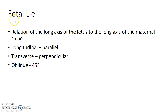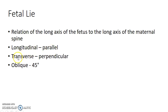Now coming to fetal lie. Fetal lie is the relation of the long axis of the fetus to the long axis of the maternal spine. There are three types of lie: longitudinal lie when the fetus is parallel to the maternal spine, transverse lie when the fetus is perpendicular to the maternal spine, and oblique lie when the fetus and the maternal spine are at an angle of 45 degrees.